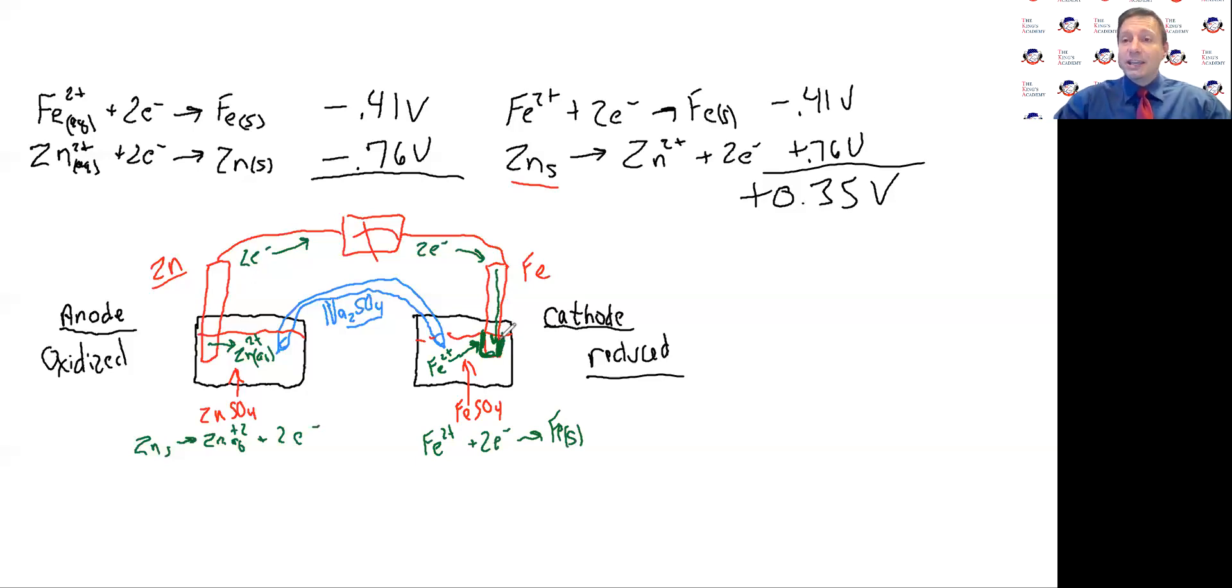So our anode, our zinc is shrinking because the zinc metal is coming off and going into solution and sending the two electrons across. And the iron is building, getting thicker because the iron cations are attracted to those two electrons and building onto that iron electrode.